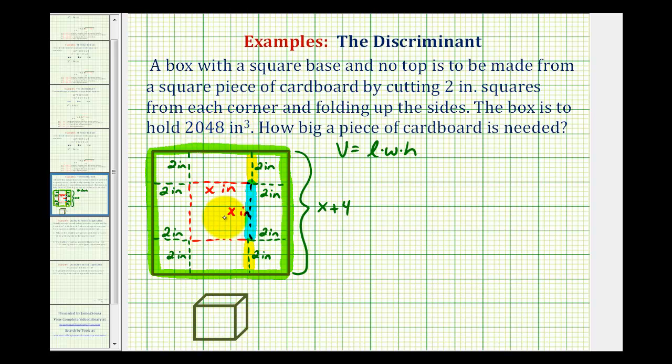So using the dimensions from the piece of cardboard here, the base would be x by x, and the height would be 2 inches. So we know the volume would have to be x times x times 2, or 2x squared.